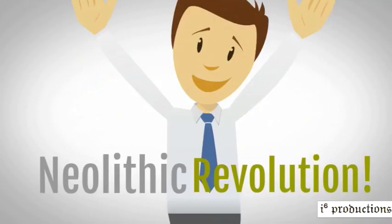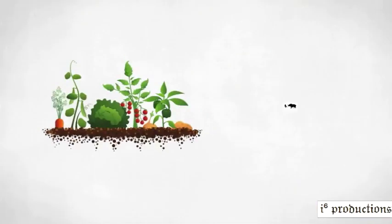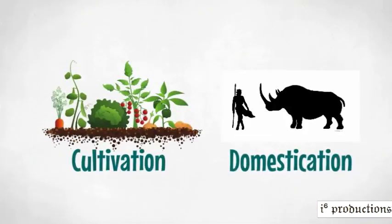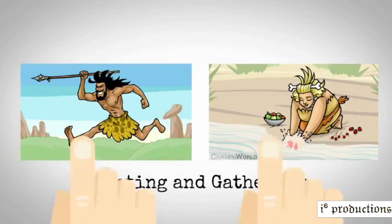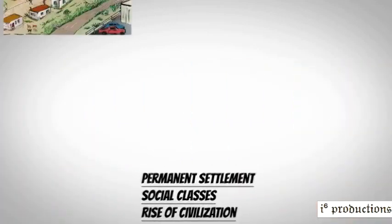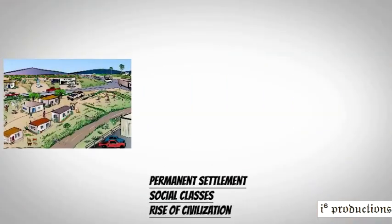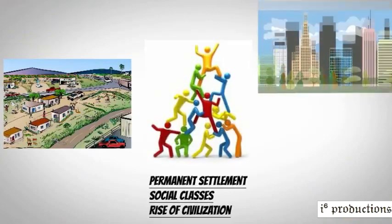The Neolithic revolution was when people started to cultivate crops and domesticate animals. This event was a fundamental change in the way people lived. The shift from hunting and gathering to agriculture led to permanent settlements, the establishment of social classes, and the eventual rise of civilizations.